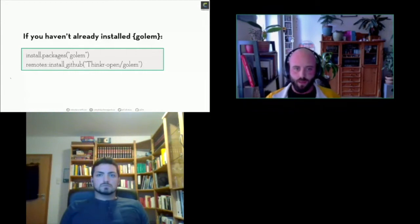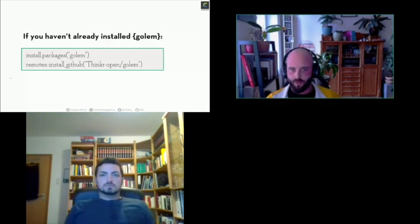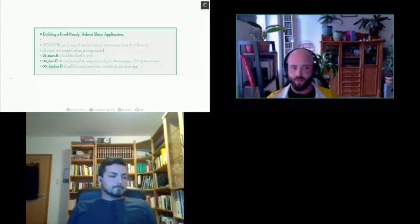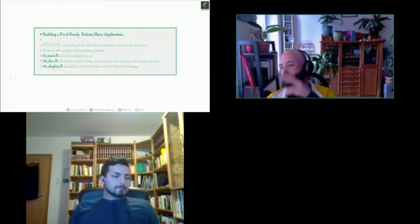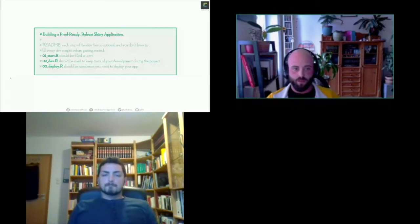After creating the Golem project, it will tell you this is a way to build a production-ready robust Shiny application, and that there are three files provided in the development folder: the start, the development, and the deploy scripts. These are the three workflow steps it will support you to manage in a simple way.